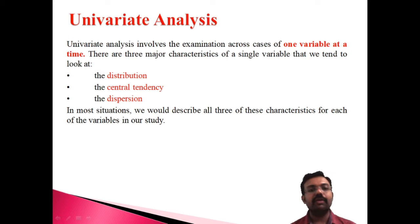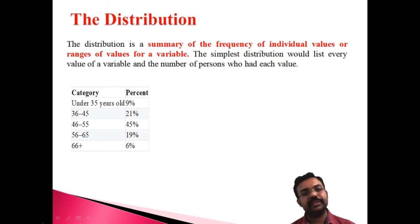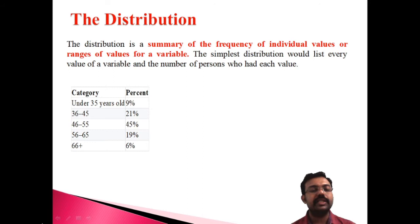Let's move into the distribution category. Distribution means frequency distribution. There is a discrete frequency distribution and a continuous frequency distribution — these are the two categories. The continuous type depends upon class intervals, while the discrete type has no class interval.